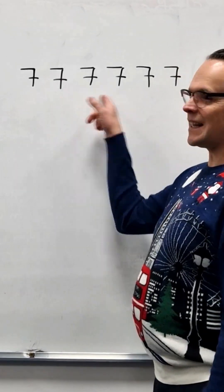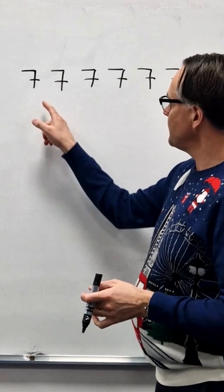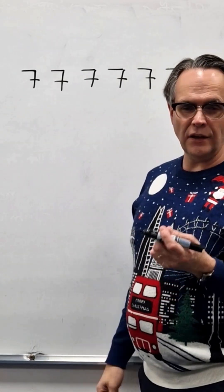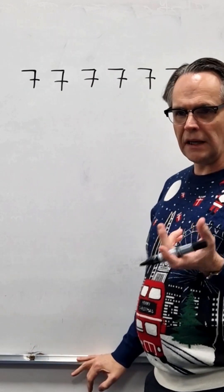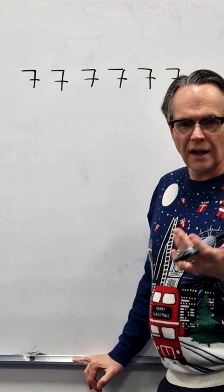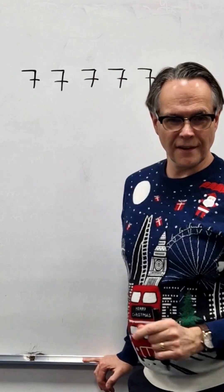This puzzle is called the 6 sevens puzzle and this is how it works. You've got 6 sevens and you've got to see, using as many pluses, minuses, times, divide, brackets, what numbers you can make just using 6 sevens.